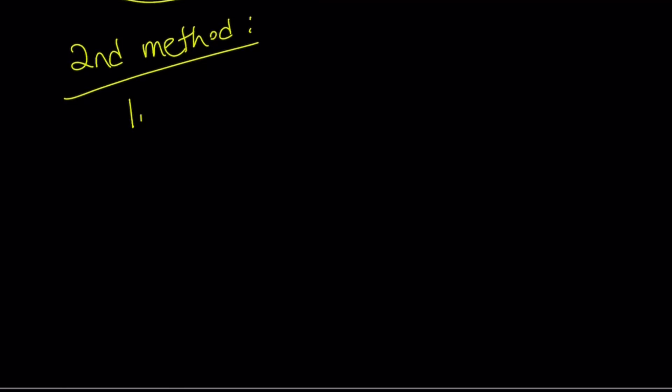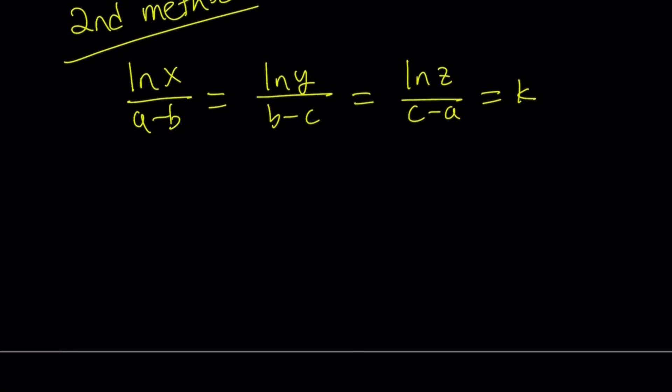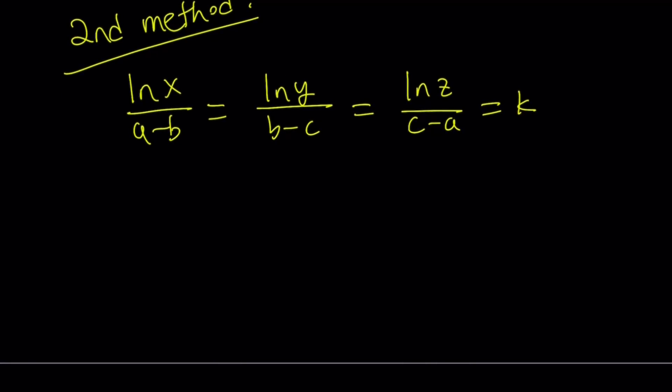My second method involves a different approach. So for the first method we used exponentials. For my second method I'm going to use the log function, more like properties of logs. And somebody suggested that I make a video on properties of logarithms. I think that would be a good idea. So I'll think about it and try to put together something. So from here if you do the cross multiplication, and by the way I just snuck in the k there, in a lot of problems like this one where we have a proportion, we want to set all these ratios equal to something so that we can write everything in a similar way. So from here we get ln x equals k times a minus b, which I can write as ka minus kb. ln y becomes kb minus kc. And ln z becomes kc minus ka.